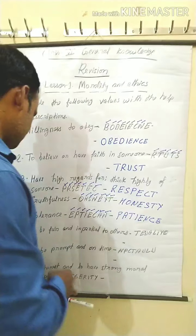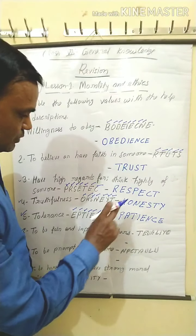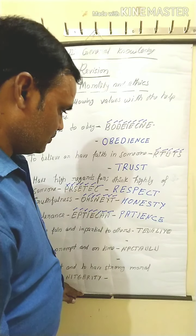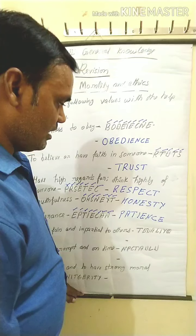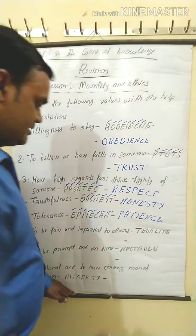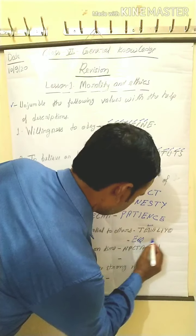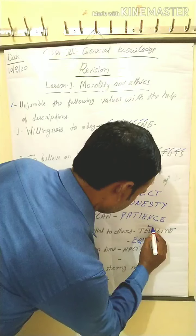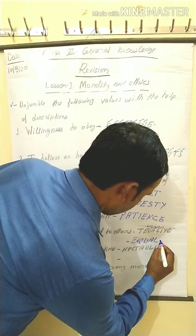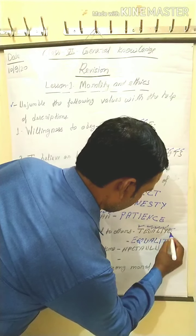Next, number six: to be fair and impartial to others. The jumbled letters given are D-E-U-A-L-I-Y-Q. The correct unjumbled word is Equality.